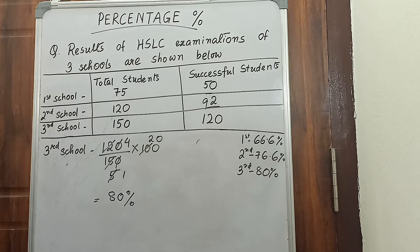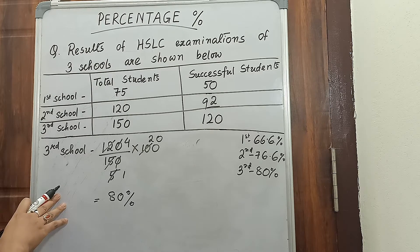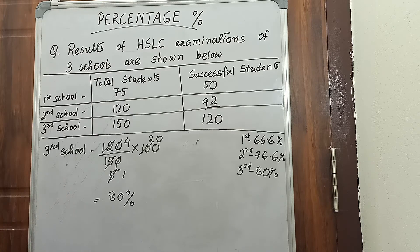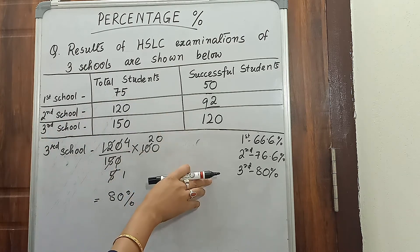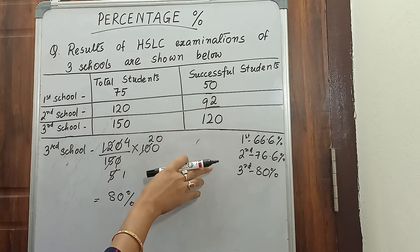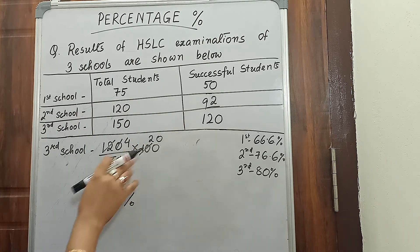Now we will find out the percentage of the unsuccessful candidates. To do this, let us first find out the number of students who are unsuccessful in each school.